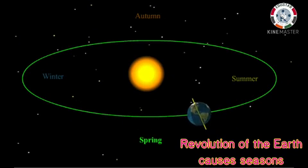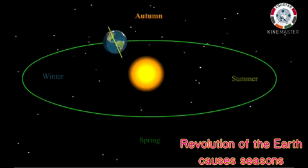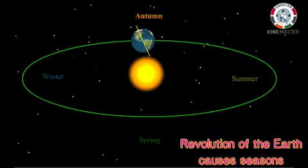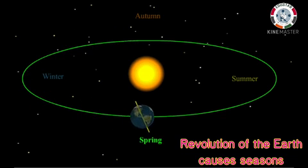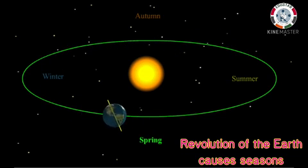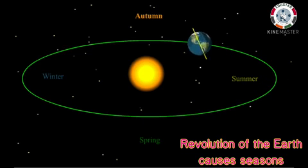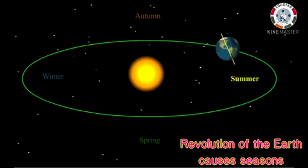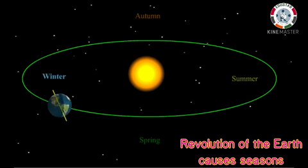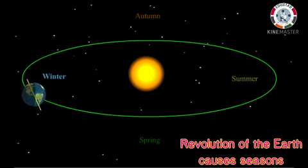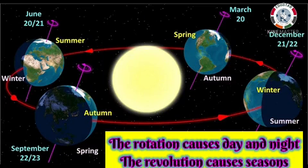The revolution of the Earth around the Sun and the tilt on its axis cause change of seasons. We experience summer, winter, spring, and autumn depending on the amount of sunlight we get at different times of the year. The part of the Earth that is tilted towards the Sun receives direct sunlight and experiences summer. The remaining part tilted away from the Sun receives slanting sunlight and experiences winter. This is how rotation and revolution take place — rotation causes day and night, and revolution causes seasons.